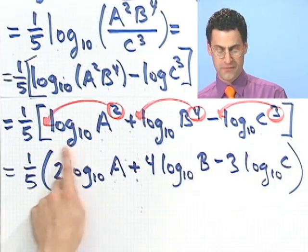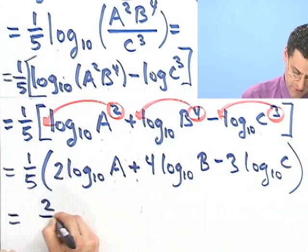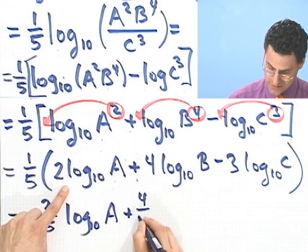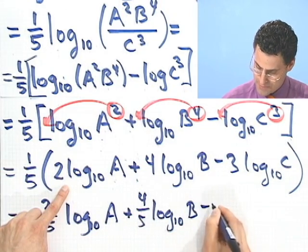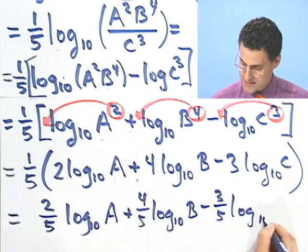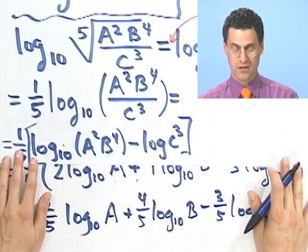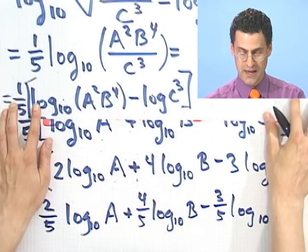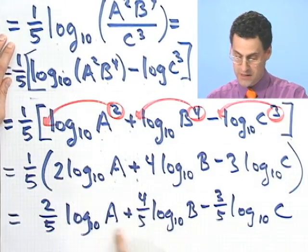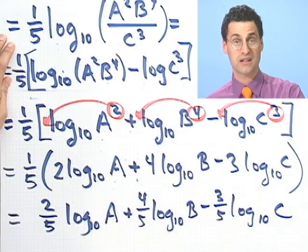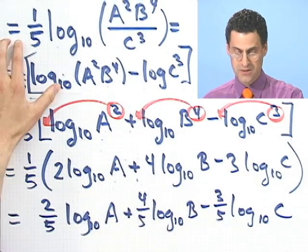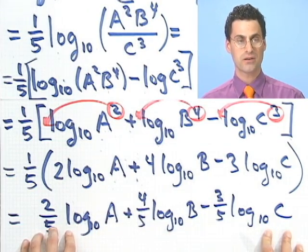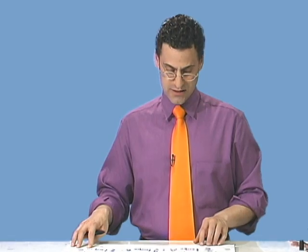One fifth times two log base 10 of a plus four log base 10 of b minus three log base 10 of c. And you can distribute that one fifth if you want it throughout. So I have two fifths here, log base 10 of a plus four fifths log base 10 of b minus three fifths log base 10 of c. You'll remember the original question was log base 10 of the fifth root of all that stuff. And I was able to rewrite that into this very tidy form. Well, not tidy, but it's very simple. It's just log terms that I'm adding or subtracting together with coefficients. So in fact, what you can see is using these properties of logs, we're actually able to express these kind of objects in a much simpler way.